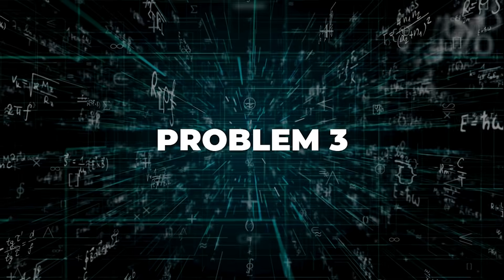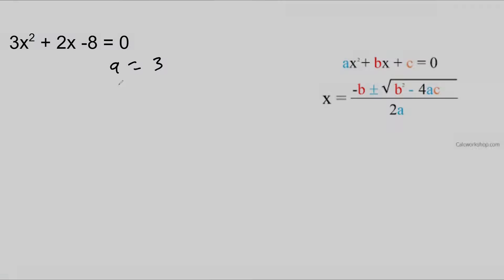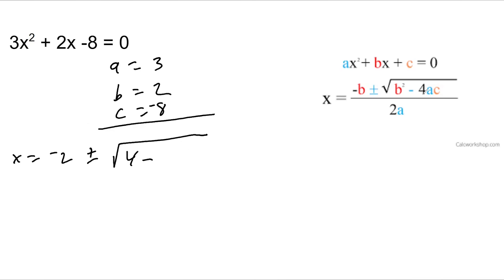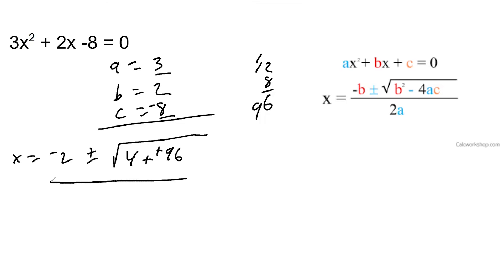Let's do another one. a is equal to 3, b is equal to 2, and c is equal to negative 8. x equals negative b — negative 2 — plus or minus the square root of b squared: 2 squared is 4, minus 4ac. I'll do 4ac in my head: 4 times a is 12, times negative 8. 12 times 8 is 96, and it comes out to negative 96 because of the negative 8. That gives me 4 plus 96, all over 2a, which is 6. This gives me 100.